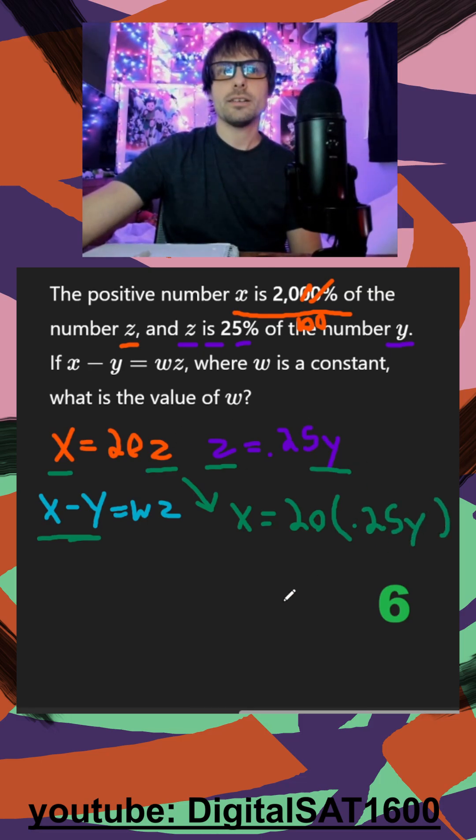So I can put in 0.25y here, and I get x is equal to 20 times 0.25, which should be x is equal to 5y.